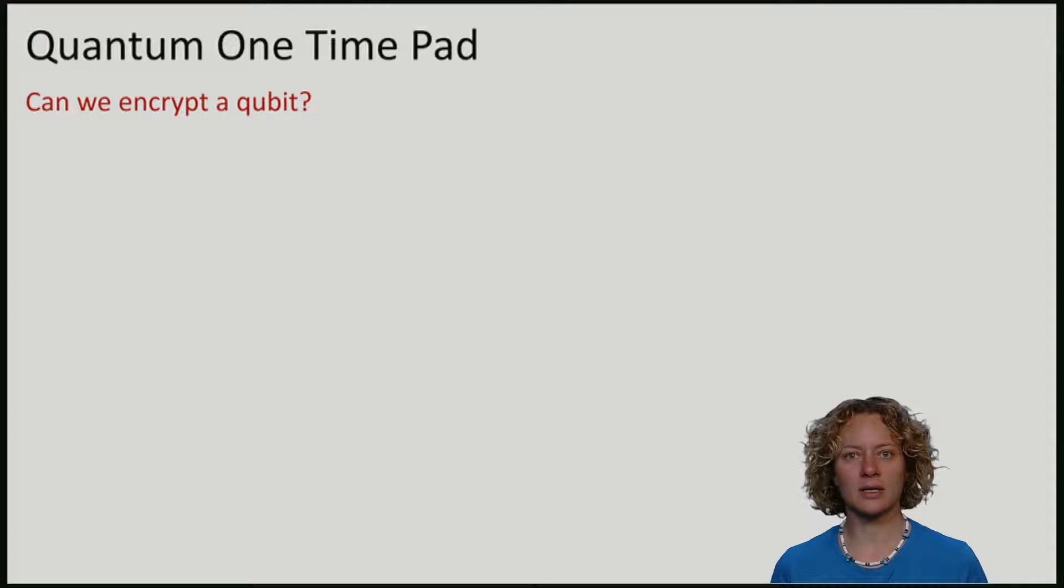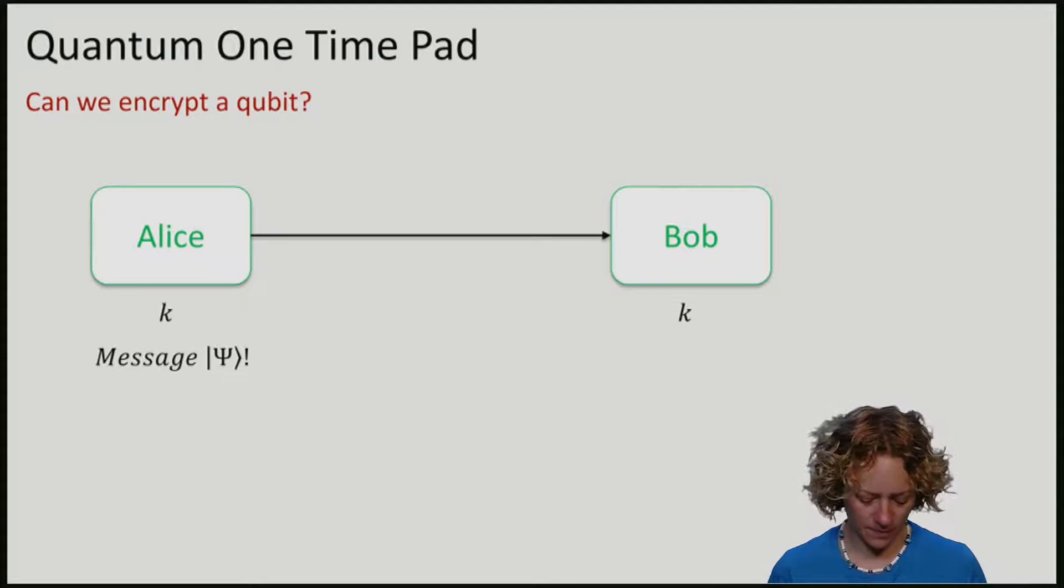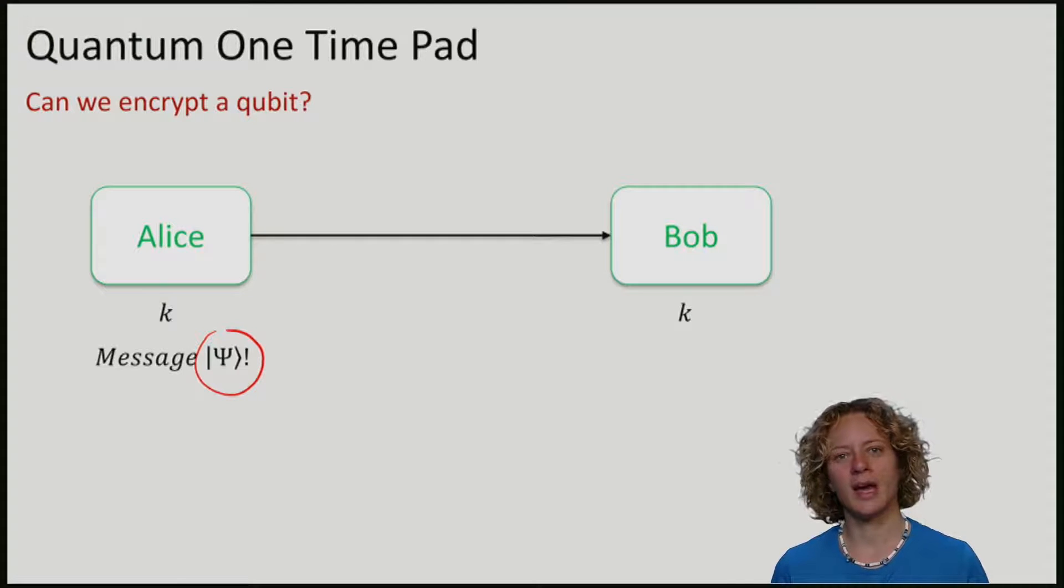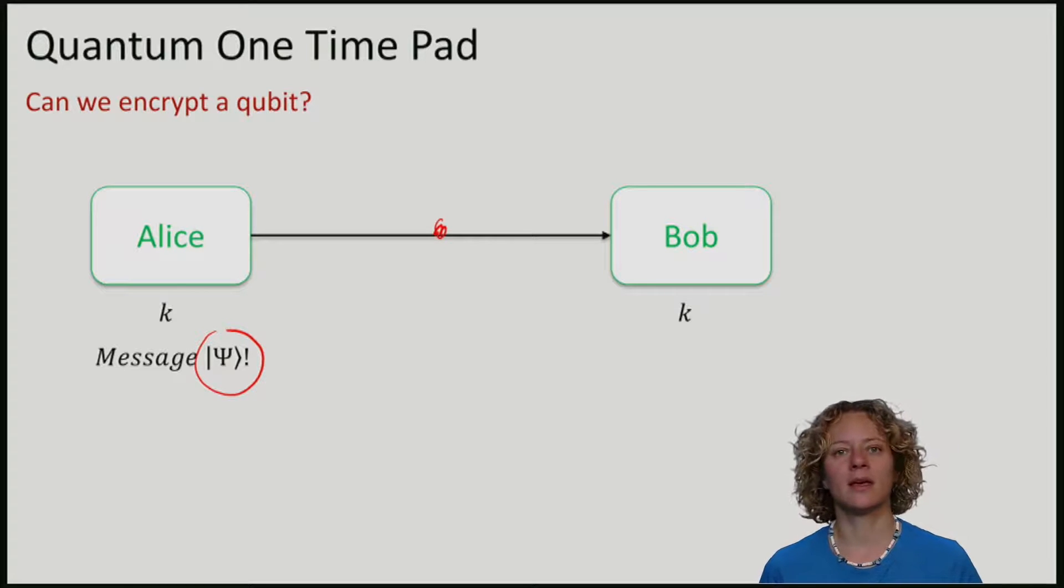To see this, let's first see what the quantum encryption scheme should actually look like. Alice's goal is now to send a qubit, psi, to Bob. And she wants that Eve, who's trying to listen in to the wire, cannot learn anything at all about psi.